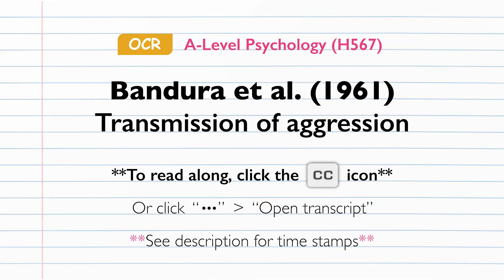Social learning theory proposes that people can learn behaviour by watching others, also known as vicarious learning. It assumes that when someone watches another person get rewarded or punished for a particular behaviour, they will learn whether that behaviour should be conducted or not. Previous research showed children often imitate adult behaviour via vicarious learning, but had only demonstrated this effect while an adult was still present, and had not tested whether imitation still occurs when the adult is absent. Bandura et al therefore wanted to test the prevalence of imitative learning in children, by exposing them to behaviour demonstrated by an adult model, and then placing them in a novel situation without the model present.